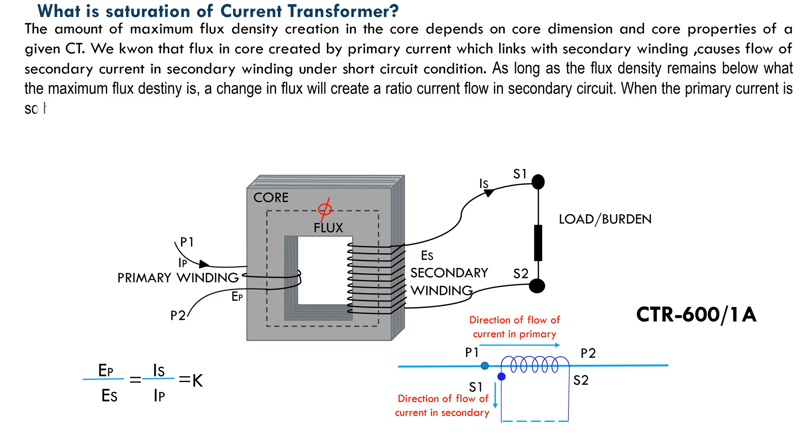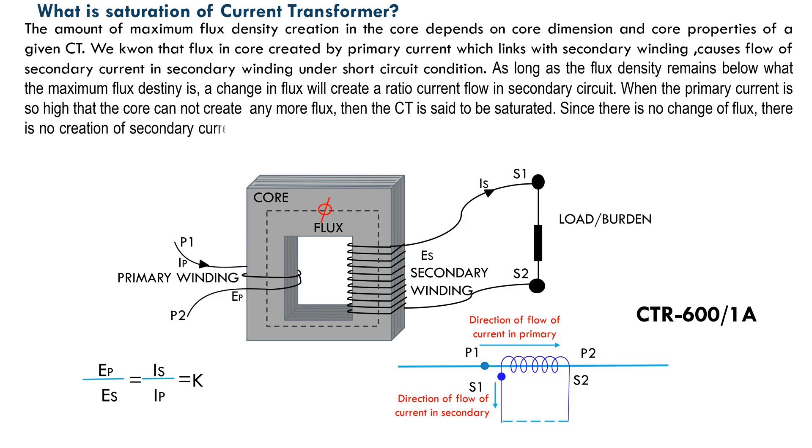When the primary current is so high that the core cannot create any more flux, then the CT is said to be saturated. Since there is no change in flux, there is no creation of secondary current flow.